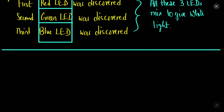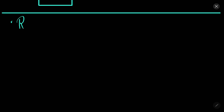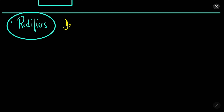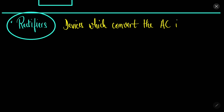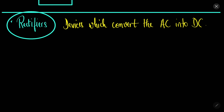Let us now continue with the discussion of rectifiers. P-N junction diodes are also used for the purpose of rectification. Rectifiers are devices which convert alternating current into direct current.